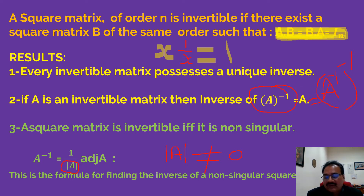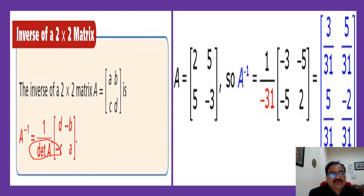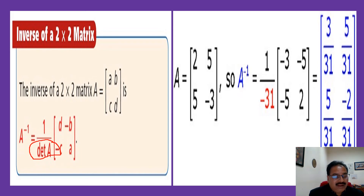This is the formula for finding the inverse of a non-singular square matrix. For a 2×2 matrix A = [a b; c d], the inverse equals 1 over the determinant of A, multiplied by the adjoint. The cofactor of A is D (positive position), the cofactor of B is −B, then −A and A. This whole matrix is known as the adjoint of A.